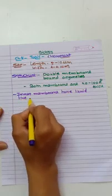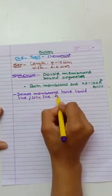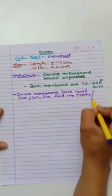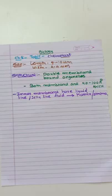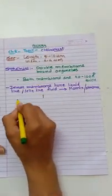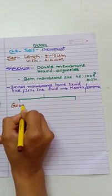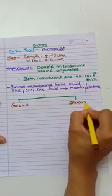The inner membrane has a liquid-like or jelly-like fluid present, and that is called matrix or stroma. The inner matrix is divided into two parts: grana and stroma.